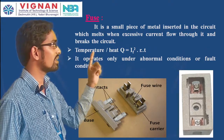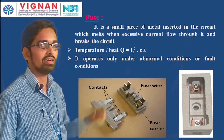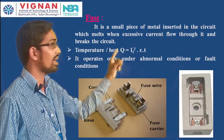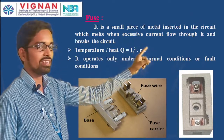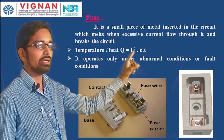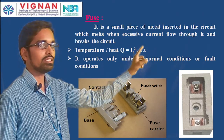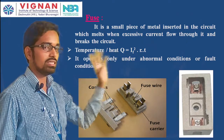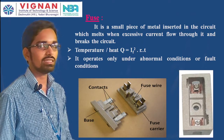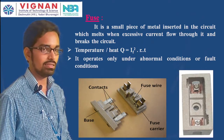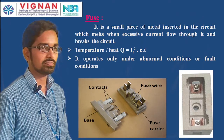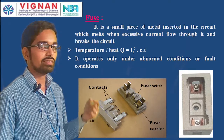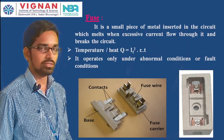The temperature or heat generated in a fuse is given by Q = I_f² × R × t, where I_f is the fault current, R is resistance, and t is time. When excessive current flows, this heat causes the fuse wire to melt.